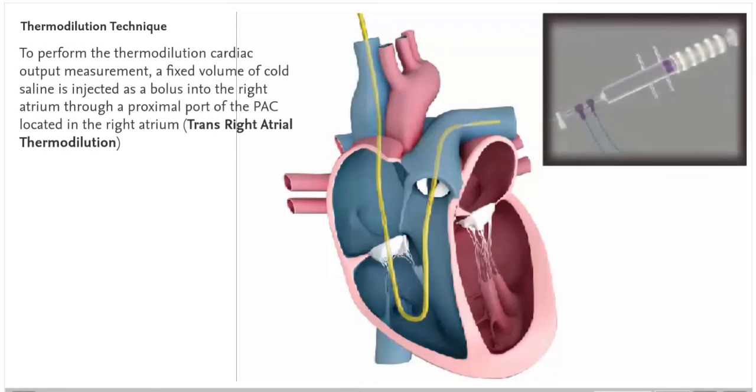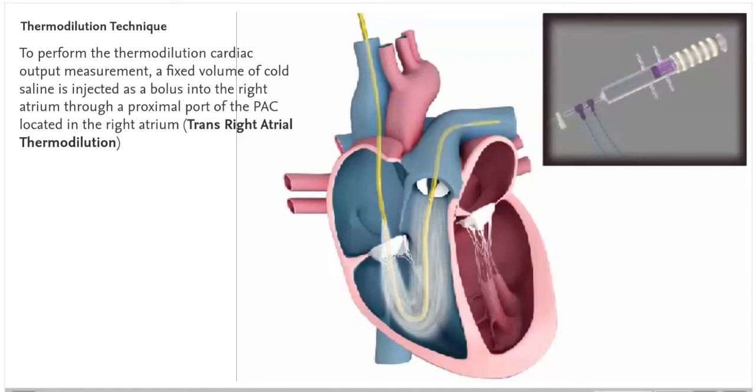To perform the thermodilution cardiac output measurement, a fixed volume of cold saline is injected as a bolus into the right atrium through a proximal port of the PAC located in the right atrium. This is trans-right atrial thermodilution.